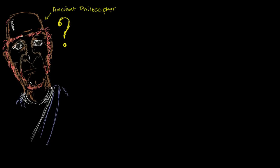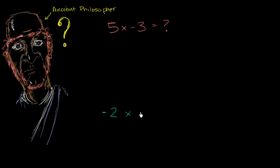For example, you aren't quite sure what should happen if you were to multiply two numbers where one is positive and one is negative — say, 5 times negative 3. You're not quite sure about this just yet. You're also not quite sure about what would happen if you multiply two negative numbers, like negative 2 times negative 6. This is also unclear to you.